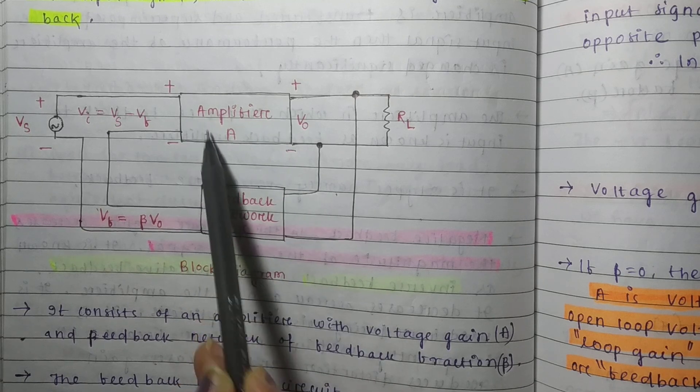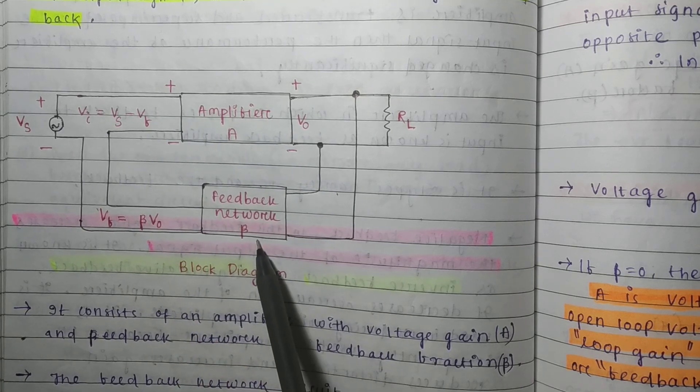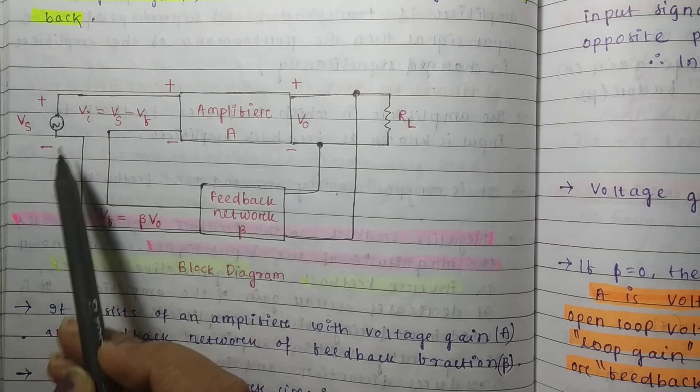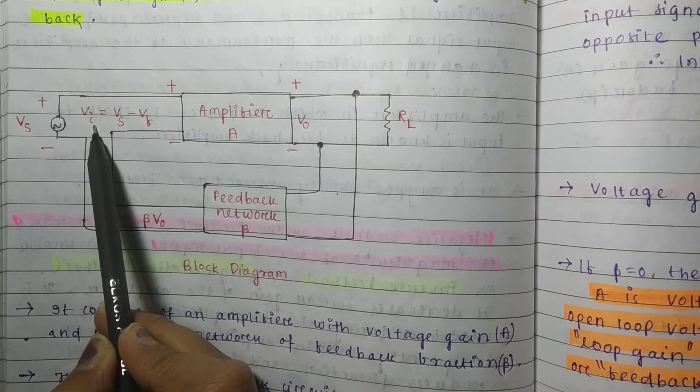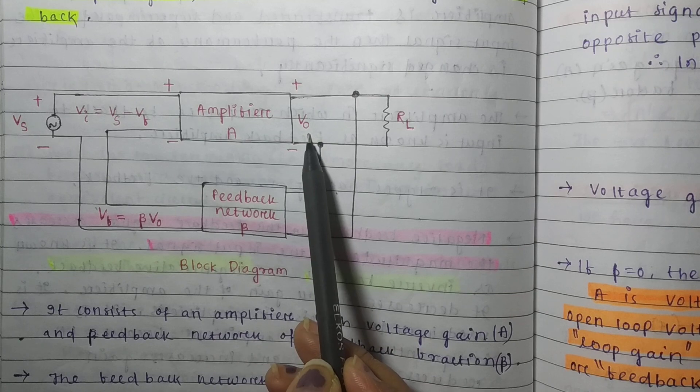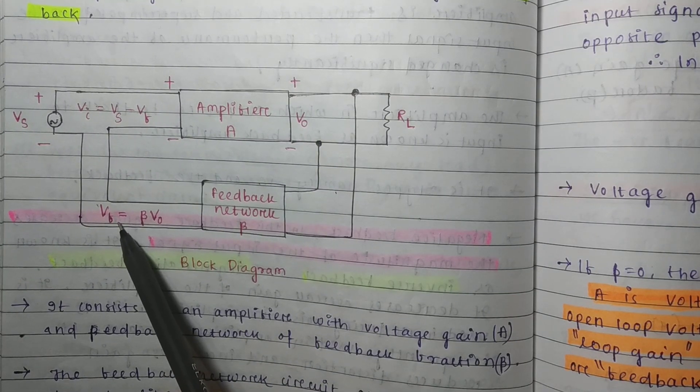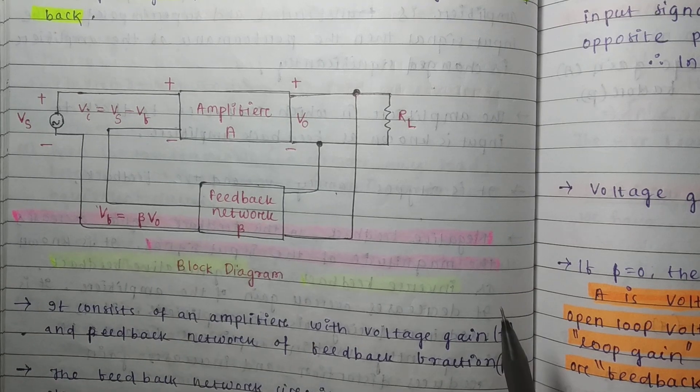Here is the amplifier A with feedback network beta. Vi is the input voltage, Vo is the output voltage, and Vf is the feedback voltage.